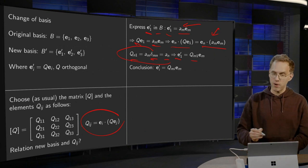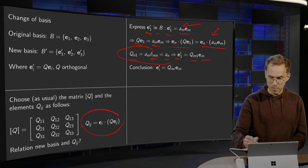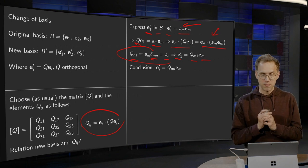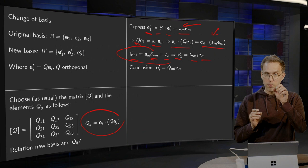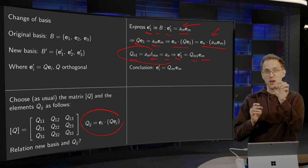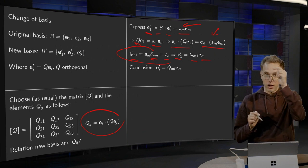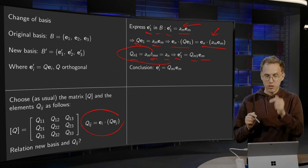So what does this mean? That the components of E1' in the old basis are Q11, Q21, Q31.